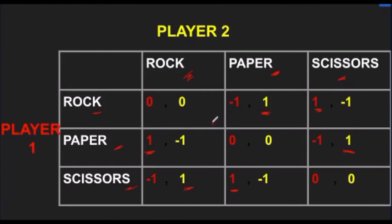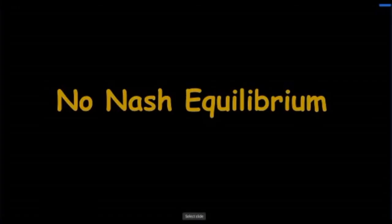Now, if we see by the underlining procedure, it reveals that there is no Nash equilibrium in all nine boxes. We see there is none of the boxes where both payoffs are underlined, and hence we conclude that the game has no Nash equilibrium.